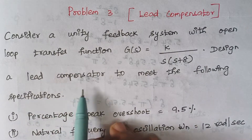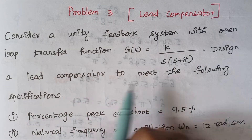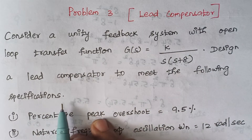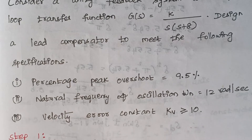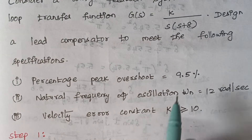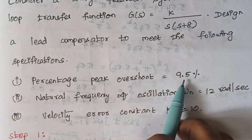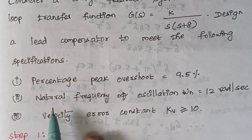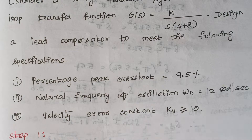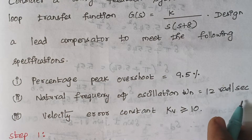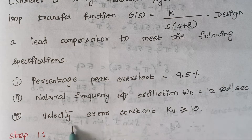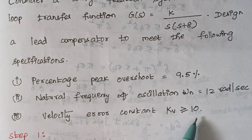Design a lead compensator to meet the following specifications: percentage overshoot is equal to 9.5, natural frequency of oscillation is equal to 12 radians per second, and velocity error constant Kv is greater than or equal to 10.